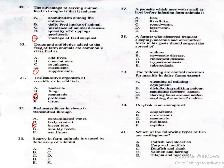Question 36: Scurvy in farm animals is caused by deficiency of which vitamin? We have A, C, D, E, and K. The correct answer is caused by deficiency of vitamin C, so that's option A.